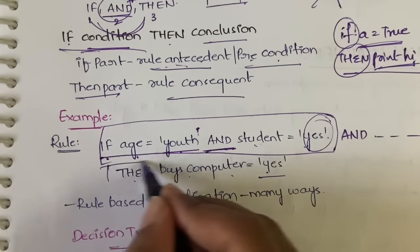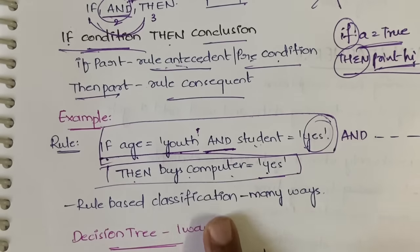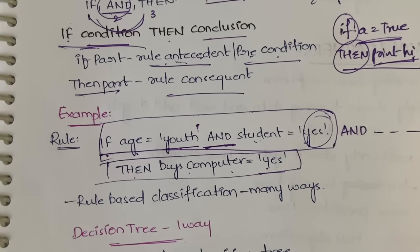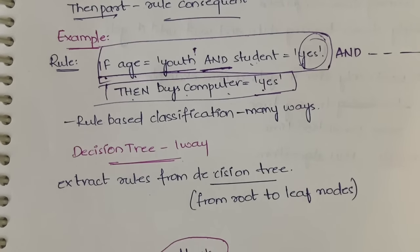Rule-based classification can be done in many ways — with the help of a decision tree, with different classifier algorithms, and so on. In this video, let us see how to do it with the help of a decision tree.